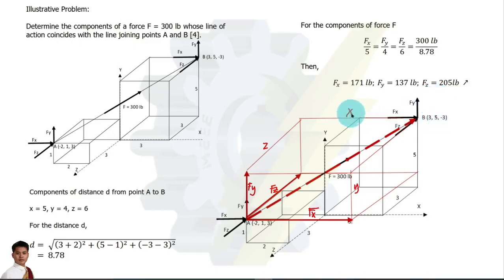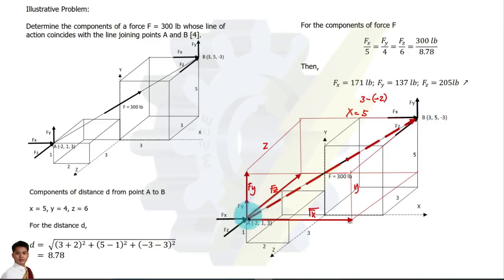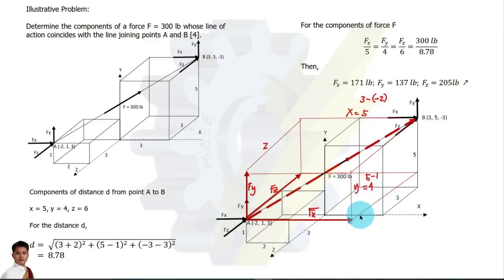X is simply three units plus two units, equal to five — or you can write three minus negative two, which equals five. Next, the vertical distance between the two points: the y-coordinate of the first point is one and the second is five, so five minus one equals four units. Last, for z, the distance between the two points along the z axis: we have three and then negative three.